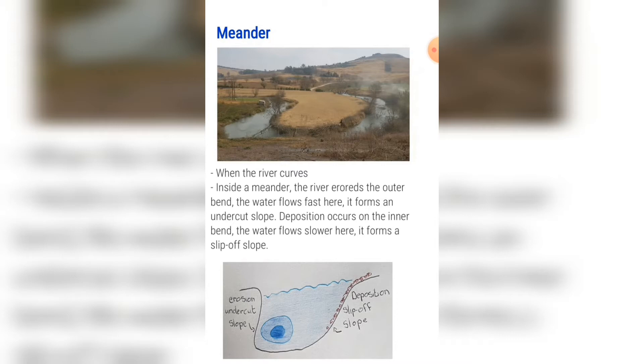The dark blue circle shows where the water flows the fastest — the darker the circle, the faster the water flows.